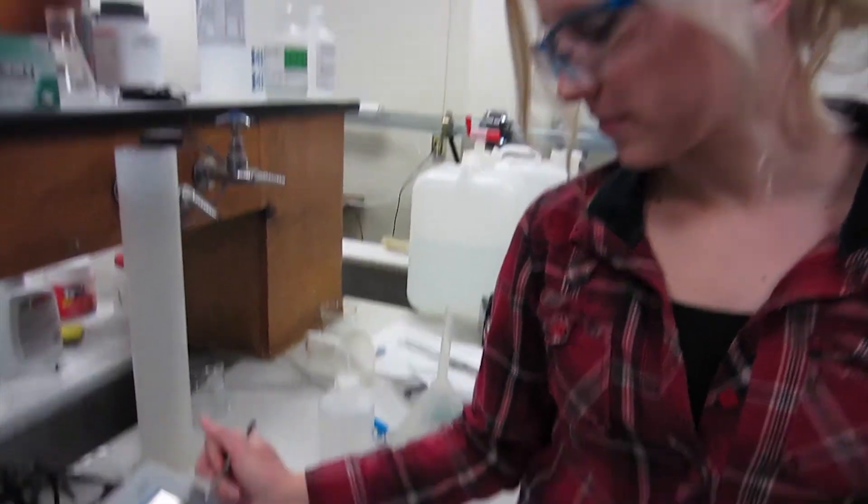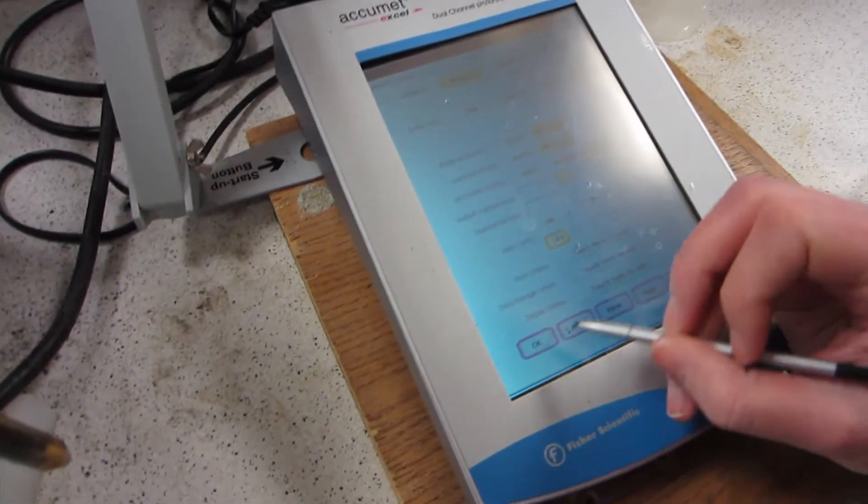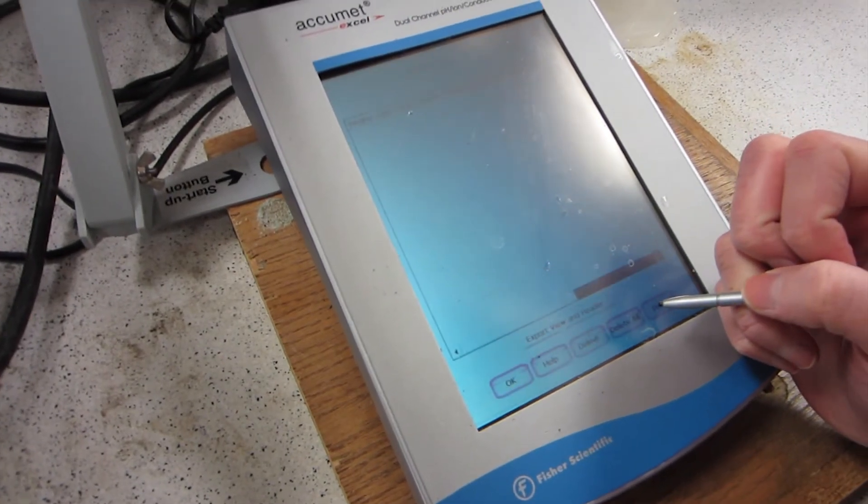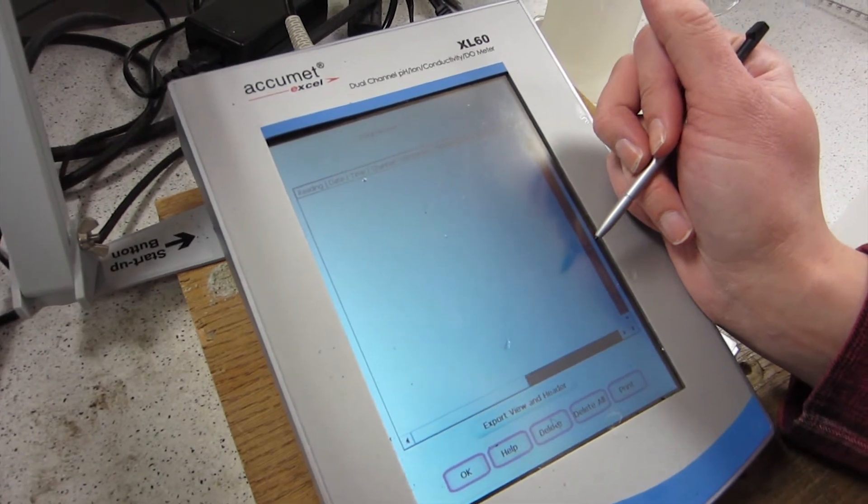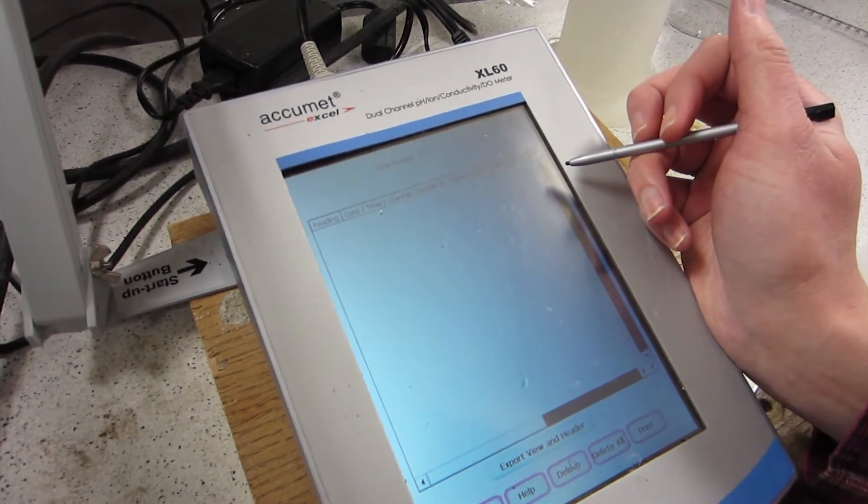You're going to go to setup, and then you're going to go to view. That will show you all the data points that have been taken. So in order to get this off, as you can see, it's pulling it up right now.